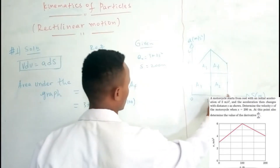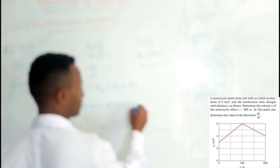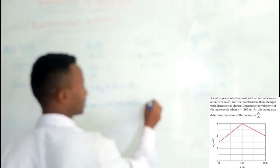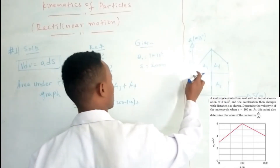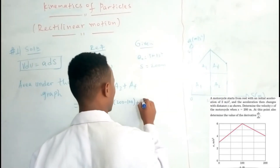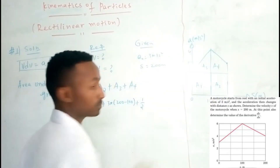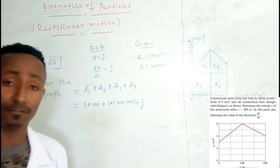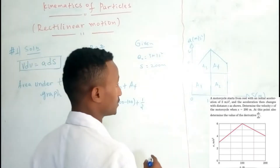Area 1 plus area 3 becomes one half of base times height because of the triangular shape. Similarly, area 2 is a rectangular region: 3 times (200 minus 100) equals 300. The triangular areas use the formula half of base times height.